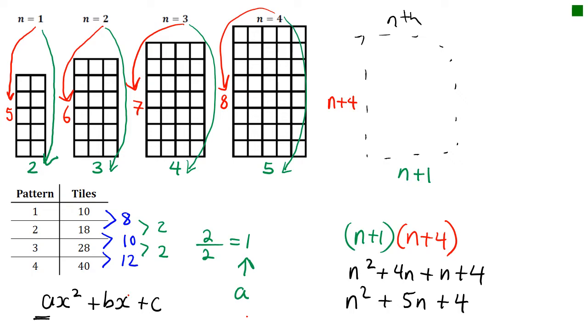What you should see is that I have 1N squared, which is what I was expecting, because my second difference was 2. So 2 divided by 2 gives 1, confirming the coefficient of N squared.